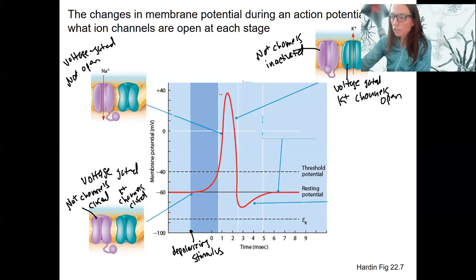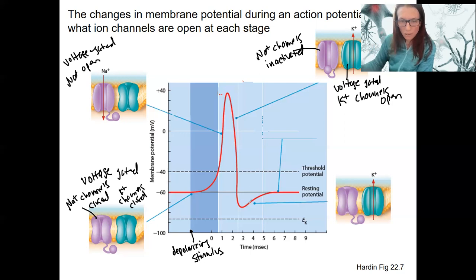Potassium flows out until we go down and we hyperpolarize. At this point right here, this is showing the Na channel resetting or closing. Where we are right here, potassium channel is still open.